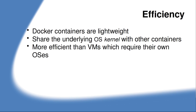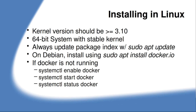Docker containers are lightweight. They share the underlying operating system kernel with other containers, making them more efficient than virtual machines, which require their own operating systems. Kernel versions should be greater than 3.1 if you're installing Linux locally. I'll be doing this demonstration with Debian 12. Docker can be installed on Linux, macOS, Windows, and I believe Android as well. Always update the package index with sudo apt update — that's very critical when running Docker containers, especially on Ubuntu.